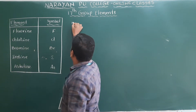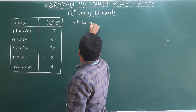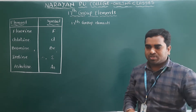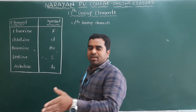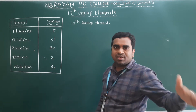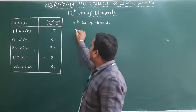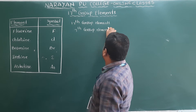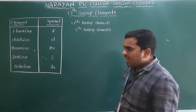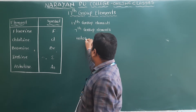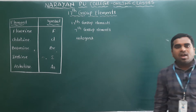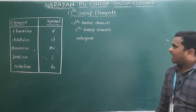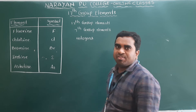These elements are called 17th group elements. If you don't consider the D block elements — there are 10 D block elements — they can also be called 7th group elements. These elements are also called halogens, similar to how 15th group elements were called pnictogens.